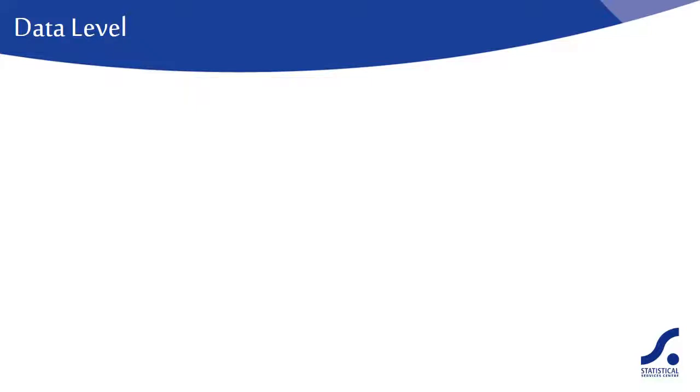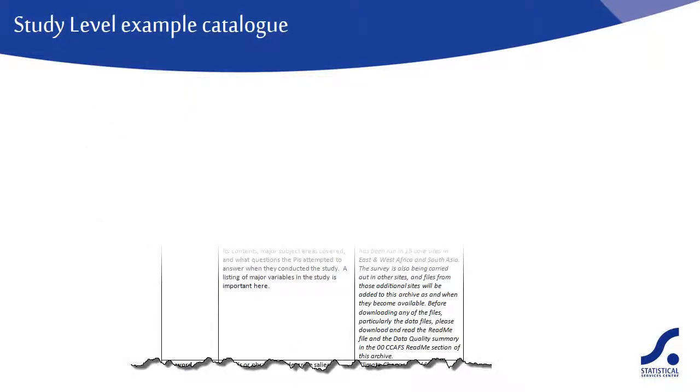Other questions, such as what does each column represent, are data level questions. We refer to this as the data dictionary. For each variable in your data set, you should include the data type, a variable label to briefly describe it. If it's a coded variable, then value labels will be needed so users can interpret the data correctly. Have you used any missing value codes? And if so, what are they?